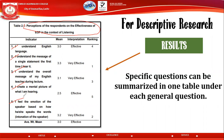For example, under general question one, there is an indicator such as 'I understand the English language,' and the population answered 'effective' with a mean score of 3.0. Instead of ranking 1 to 5, just get the mean score and convert it to a percentage — for example, 30 percent. No ranking is needed. Each specific question can be summarized in one table under each general question.